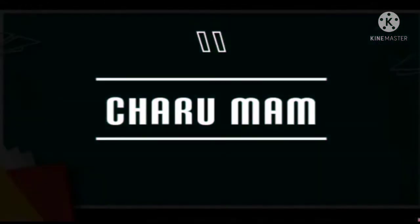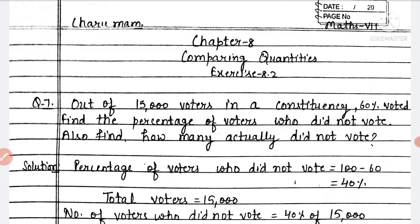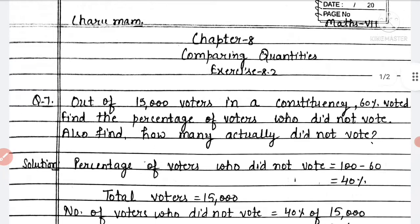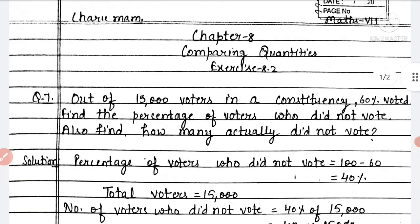Hello students, welcome to my channel. I'm your math teacher Charu. Today we will discuss the next questions of Exercise 8.2 of Chapter 8, Comparing Quantities of Class 7. Question 7 statement is: out of 15,000 voters in a constituency, 60 percent voted. Find the percentage of voters who did not vote. Also find how many actually did not vote.